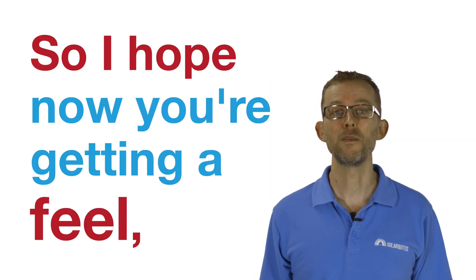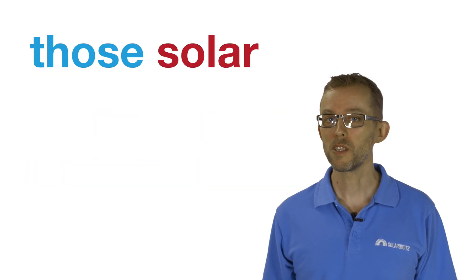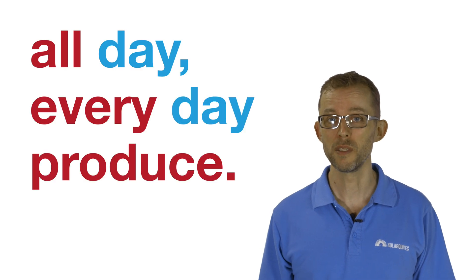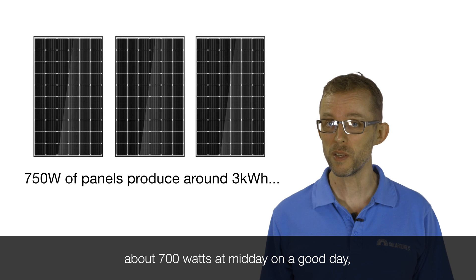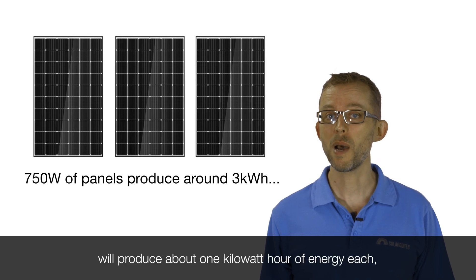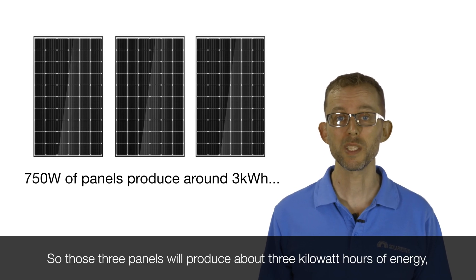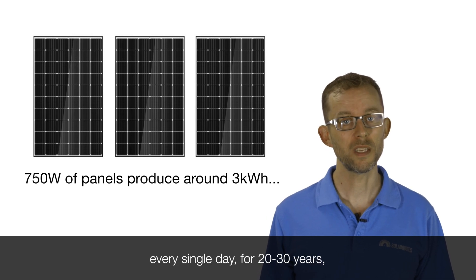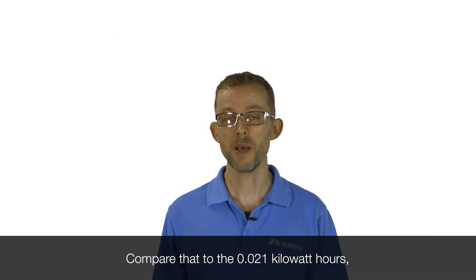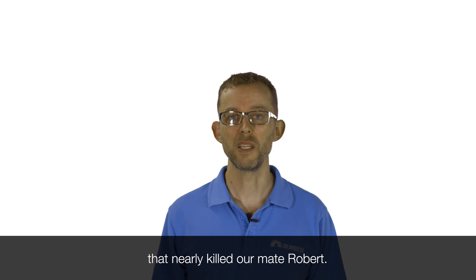So I hope now you're getting a feel for quite how much power and energy those solar panels just sit on your roof all day every day produce. Those three solar panels that will produce about 700 watts at midday on a good day will produce about 1 kilowatt-hour of energy each on an average day. So those three panels will produce about 3 kilowatt-hours of energy every single day for 20-30 years. A phenomenal amount of energy. Compare that to the 0.021 kilowatt-hours that nearly killed our mate Robert.